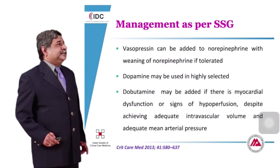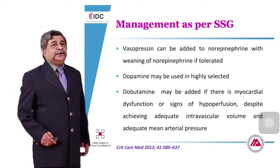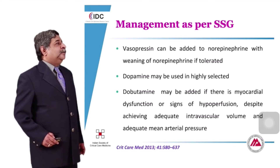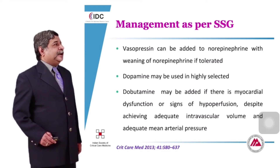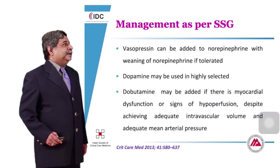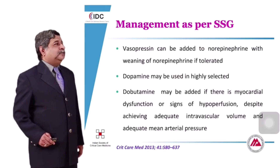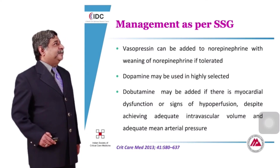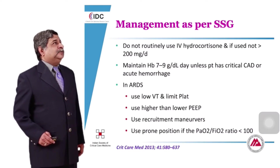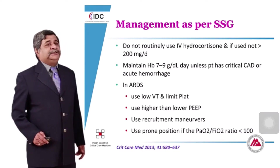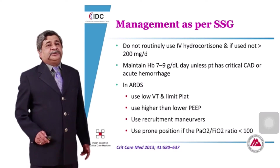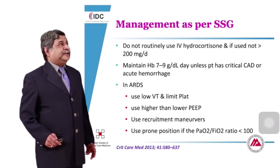Dopamine may be used in highly selected patients at low risk of cardiac arrhythmias. Dobutamine can be added if there is myocardial dysfunction or signs of organ hypoperfusion despite achieving adequate intravascular volume and adequate mean arterial pressure. Do not routinely use IV hydrocortisone; if used at all — sometimes when vasopressor doses are very high — do not exceed 200 mg per day in divided doses.